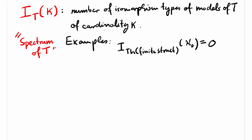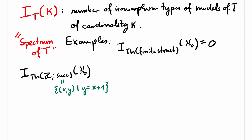Now let's have a look at something more interesting. Let's look at the first-order theory of the integers with the successor relation. The first-order theory of this structure contains, for example, the sentence that states that every element has a unique successor and a unique predecessor. By definition, we have at least one countable model of this theory, but there are also countable models that are not isomorphic to the model we started with. For example, we can form a disjoint union of two isomorphic copies of the original model. In the resulting structure, it is still true that every element has a unique successor and a unique predecessor and it is still countable, but clearly the two structures are not isomorphic. To work out the details of all this is a good exercise.